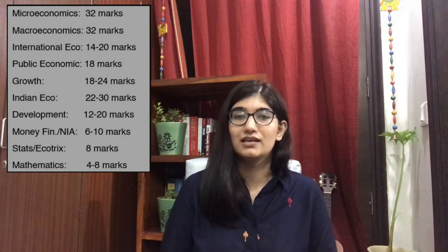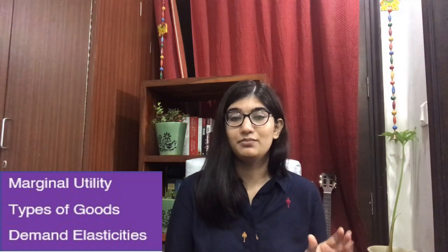Starting with microeconomics — microeconomics ke topics mein se 32 marks ka question paper ban jata hai. Paper 2, as you know, 200 marks ka paper hai. Usme se 32 marks microeconomics se aate hain. Microeconomics mein se important topics discuss karte hain. For example, consumer behavior wale topic mein se aapka marginal utility ka jo concept hai, that is a very important concept.